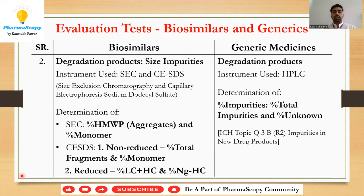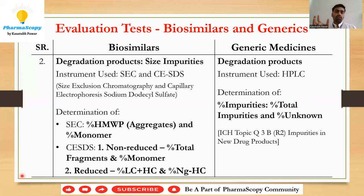In biosimilars, SEC is used to measure percent HMWP (high molecular weight proteins, i.e., aggregates), percent monomer (the main peak of the antibody), and percent LMWP (low molecular weight proteins, i.e., fragments). The main focus for SEC is HMWP for aggregates and percent monomer. CE-SDS is more accurate and has greater precision for determining fragments, so we rely on CE-SDS for fragments.